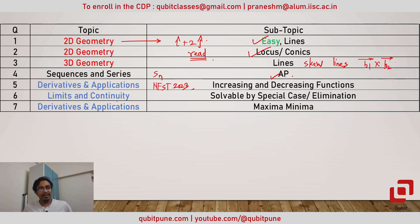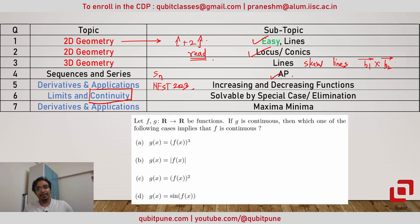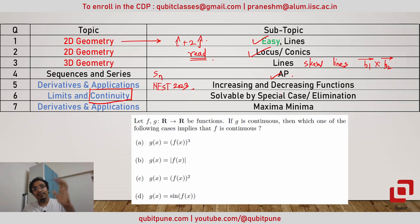The next question was on continuous functions. We were given a composite function and had to decide the continuity of the inner function. This question was solvable by considering some special cases for the given function f(x) or g(x), then selecting a case that doesn't fit the requirement and eliminating the options. That was question number six.